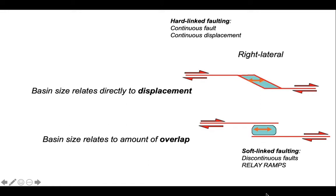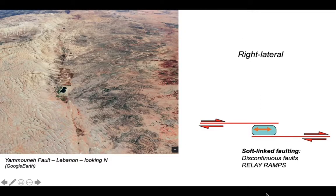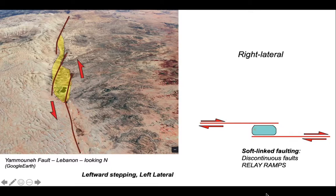Let's see how this plays out returning to the Dead Sea fault system. Here we are in Lebanon, looking north along the tract of the Yamune fault, which is one of the branches of the Dead Sea fault system in this part of the world. The contention is that we're looking at a small array of relay ramp basins associated with segmentation on the Yamune fault. The fault segments are drawn in, showing a discontinuous, irregular basin formed between three segments: the main segment from the south, a short discontinuous fault segment in the middle, and the main fault system continuing northwards.